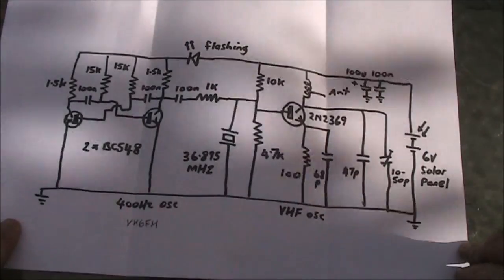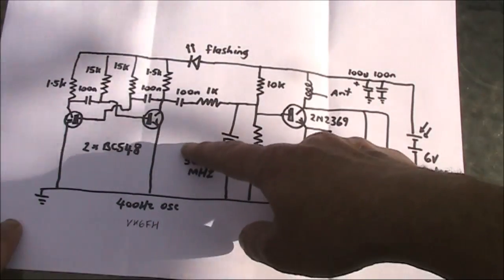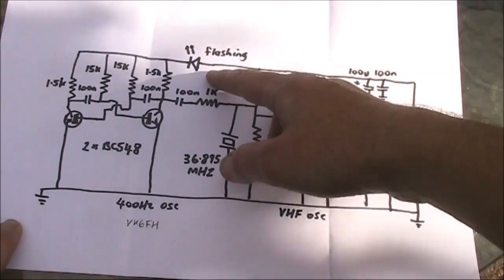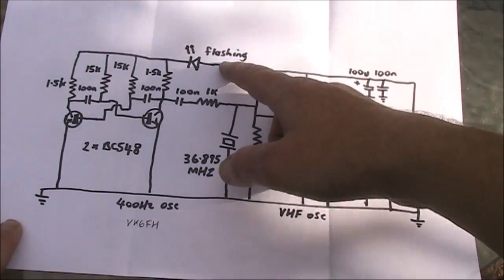There's more transistors, with these two being a 400Hz audio oscillator. That's pulsed with this flashing LED in the supply rail.